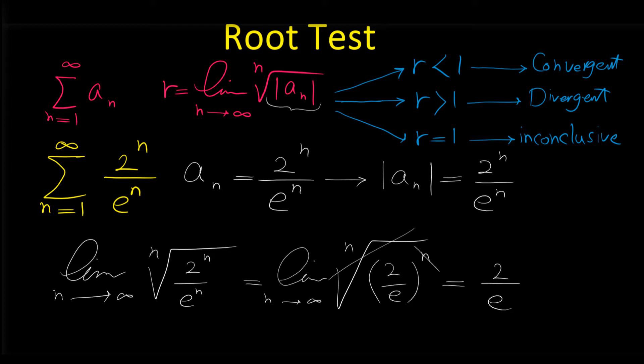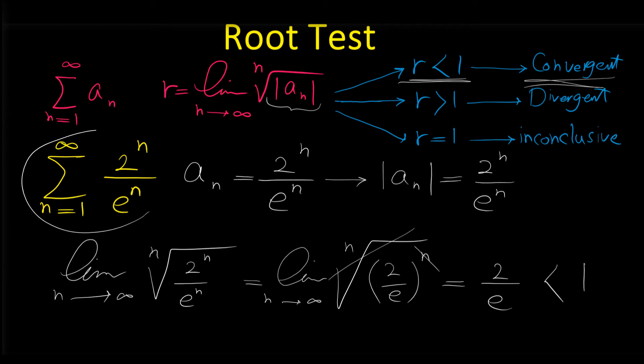So this limit equals 2 over e. Because 2 over e is less than 1 — remember that e is approximately 2.7, so 2 over 2.7 is less than 1 — based on the root test the series is convergent. When the value of the limit is less than 1, the series is convergent, so this given series is a convergent series.